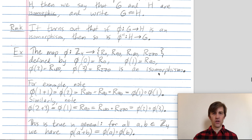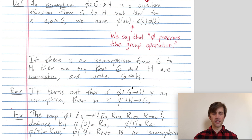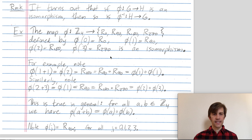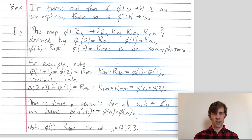This equation is no different than the one above; the only difference is that I've explicitly stated the operations in each group. In Z mod 4, the operation is addition mod 4, and in this group of rotations, the operation is composition. If you wanted to prove this property in general, a better description of phi would be the algebraic formulation: phi of any integer j is just the rotation by 90j degrees. This algebraic description is useful for proving this property more so than an explicit list of where all elements get mapped.